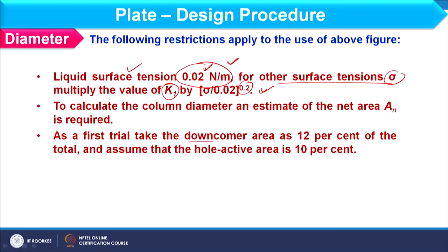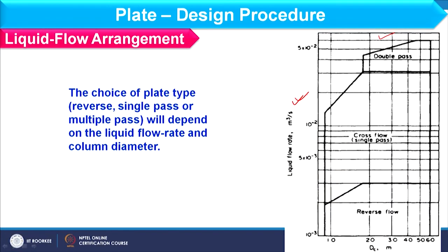This calculation also requires the downcomer area, which should be 12 percent of the total area as an initial trial. In this way we can calculate the diameter of the column. Next we have the liquid flow arrangement. There is a graph where liquid flow rate is on the y-axis and column diameter is on the x-axis. According to the column diameter value and liquid flow rate, we can choose which type of flow pattern to consider over the plate — such as single pass, reverse flow, or double pass, as already discussed in the last lecture.